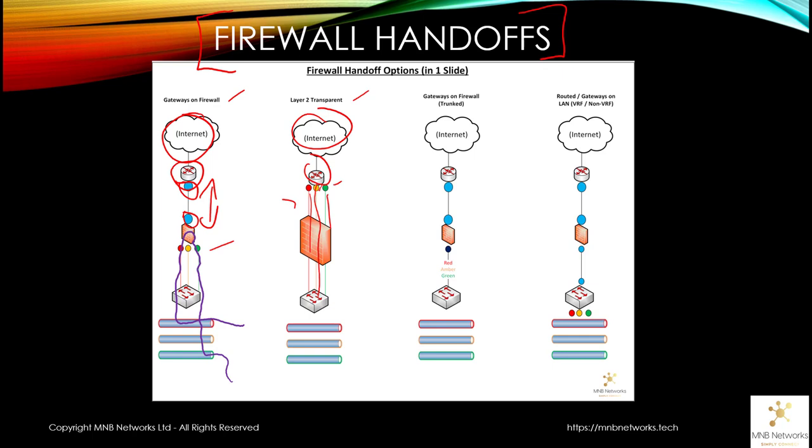However, you can apply policy on your firewall to say that red can talk to green but red cannot talk to orange segments of the network. That's handover using layer 2 transparent. Your default gateways are on an upstream device and the networks are plumbed through the firewall.